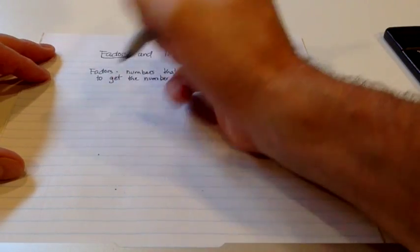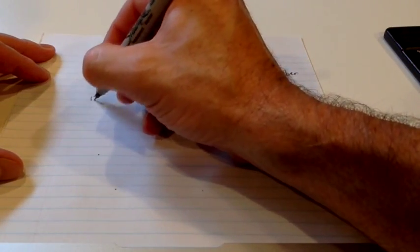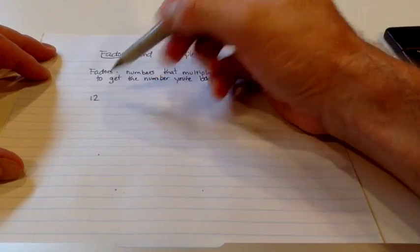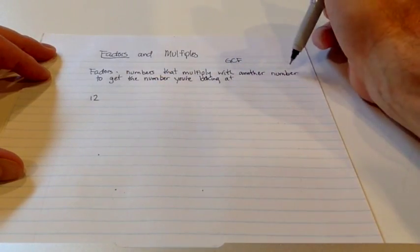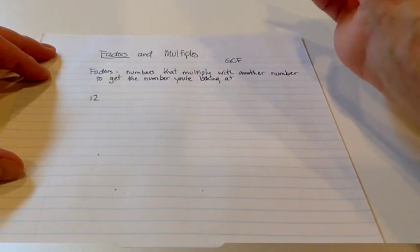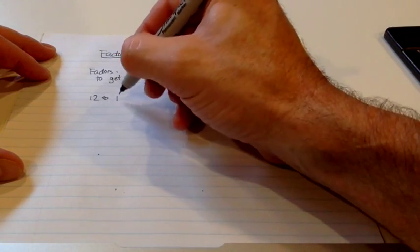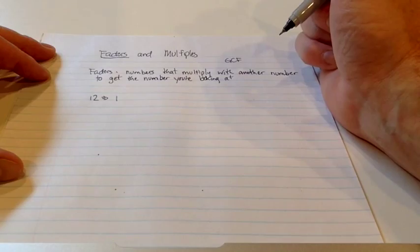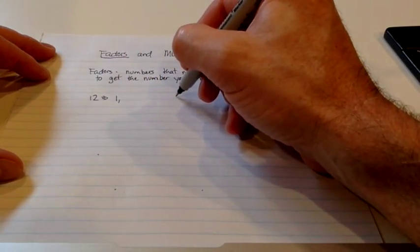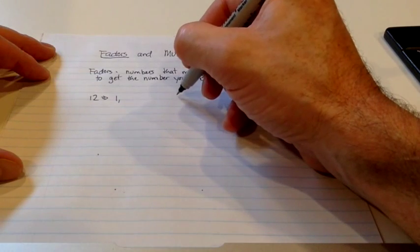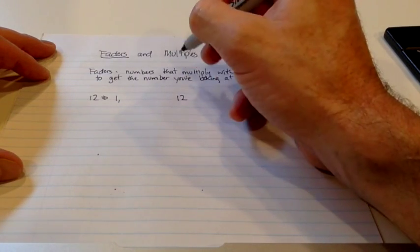For example, we'll look at the factors of the number 12. What are the numbers that multiply with another number to get 12? Well, I know that 1 goes into 12. And the easy way of doing this is, well, what goes into 12? 1 does. 1 times 12.